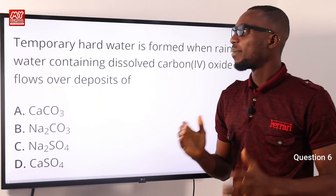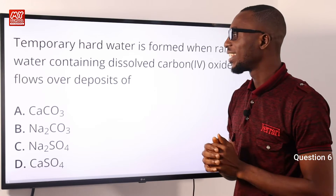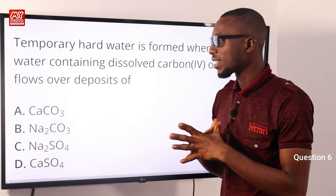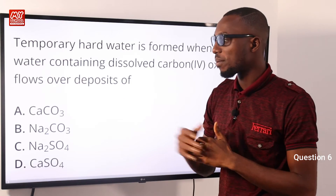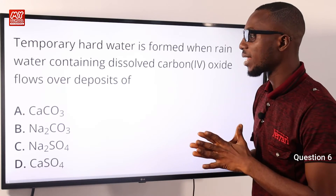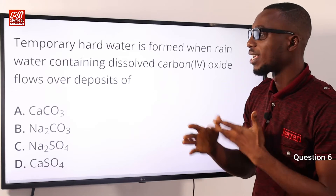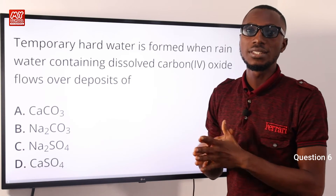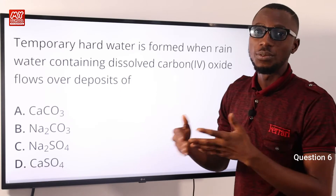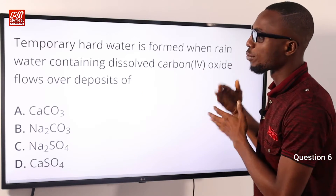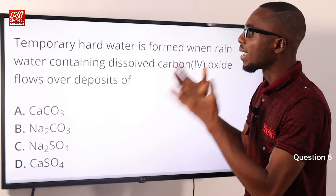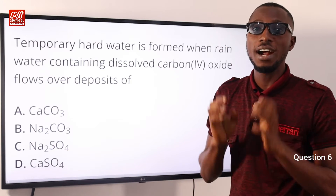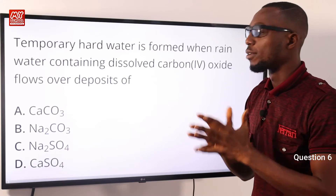Question six: temporary hard water is formed when rainwater containing dissolved carbon dioxide flows over deposits of what? Deposits of calcium carbonate or limestone. Recall that water acquires its hardness when it flows over gypsum (CaSO4·2H2O) or over limestone. The presence of CO2 helps limestone dissolve in water. Temporary hardness of water is caused by the presence of calcium hydrogen carbonate.